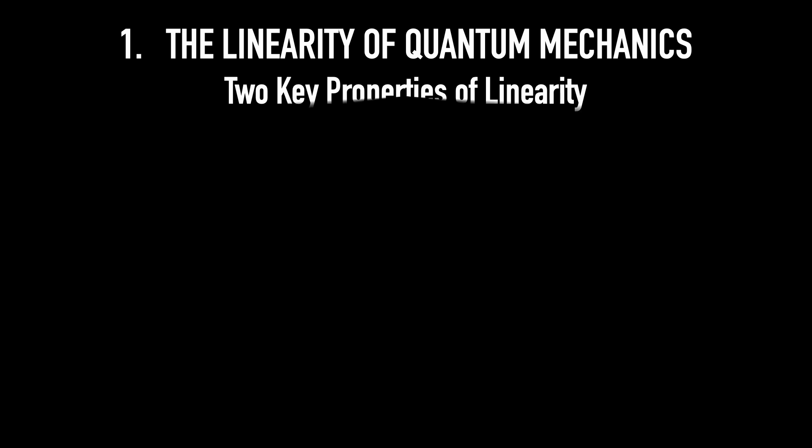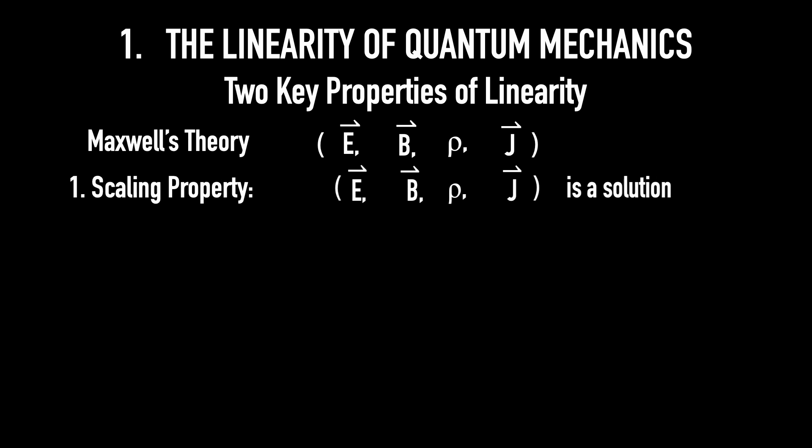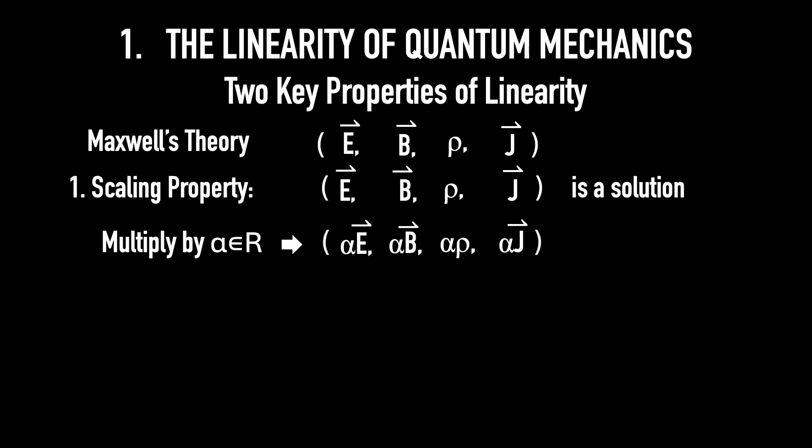Two key properties of linearity. Let me show you the linearity in Maxwell's theory in more detail. Suppose you have an electric field E, a magnetic field B, a charge density rho, and a current density j. This set of data forms a solution to Maxwell's equations. Linearity implies: 1. Scaling property. If this is a solution, then multiplying it by a constant real number alpha, giving you alpha E, alpha B, alpha rho, and alpha j, is also a valid solution.